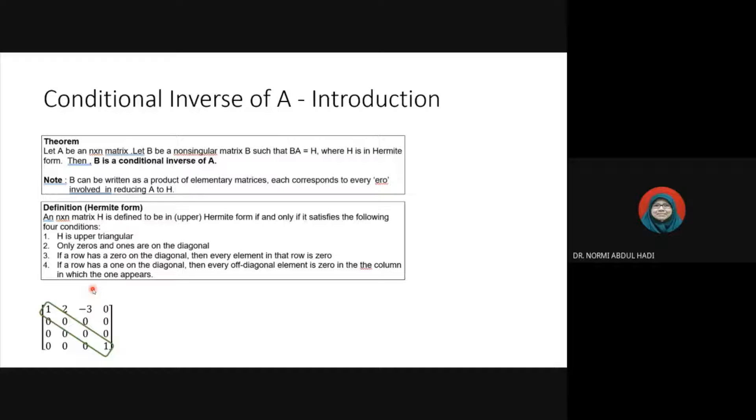If a row has zero on the diagonal, then every element in that row is zero. But if the diagonal has a one, the elements in the same column must be zero. This is very similar to reduced row echelon form. This is an example of a Hermite matrix.